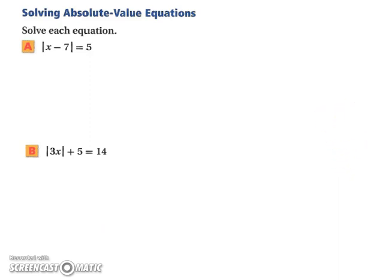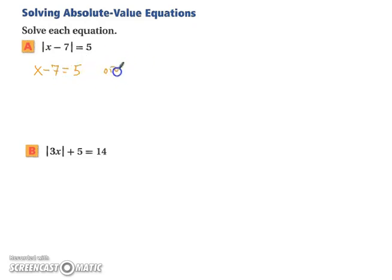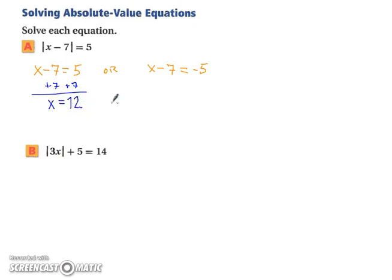Let's practice solving absolute value equations. In example A, the absolute value is already isolated, so we split into two cases: x minus 7 equals 5, or x minus 7 equals negative 5. Adding 7 to both sides in each case gives x equals 12 or x equals 2.